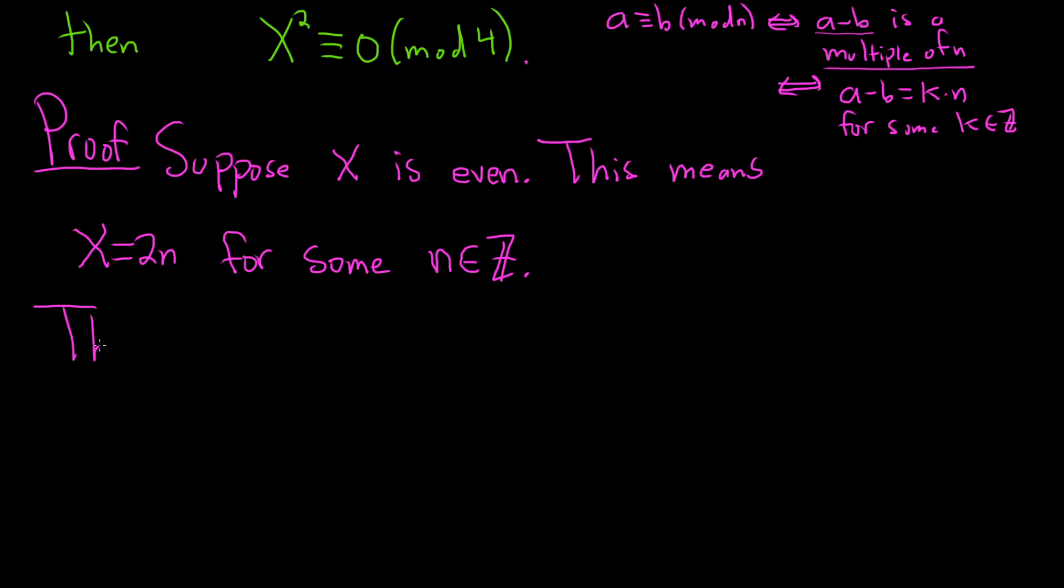Then x squared minus 0, well, that's equal to (2n) squared minus 0, which is just (2n) squared. I'm showing lots of extra steps here - this is just 4n squared, which is a multiple of 4.